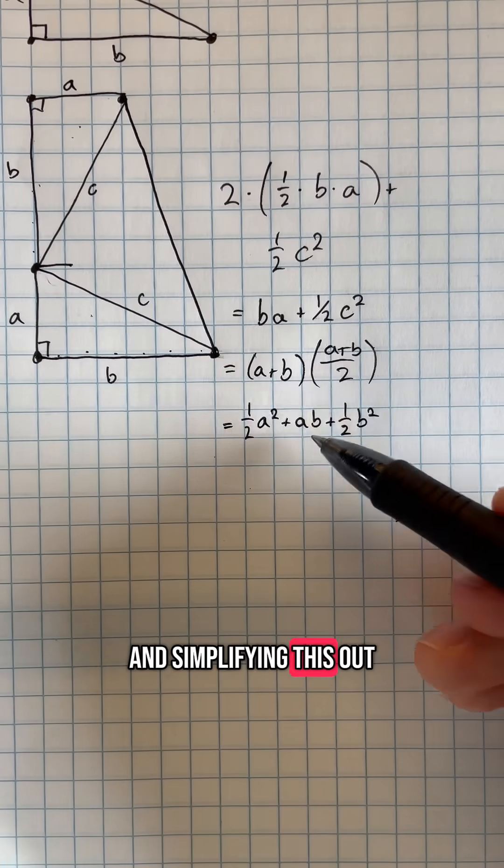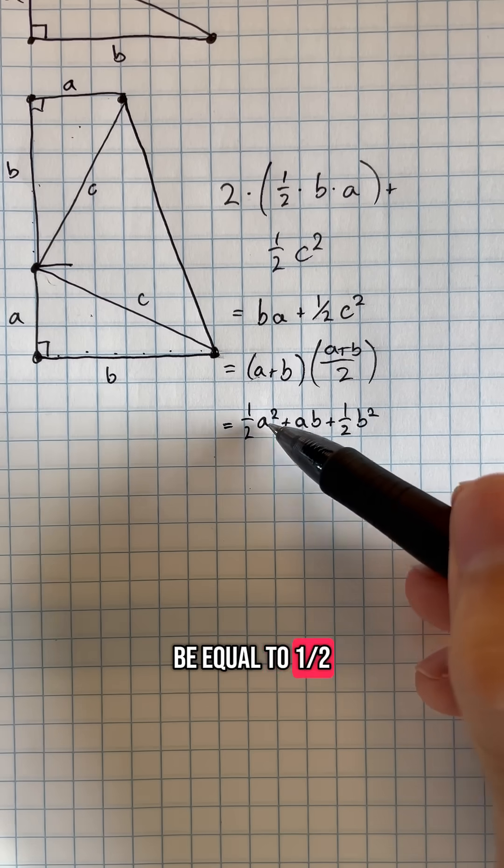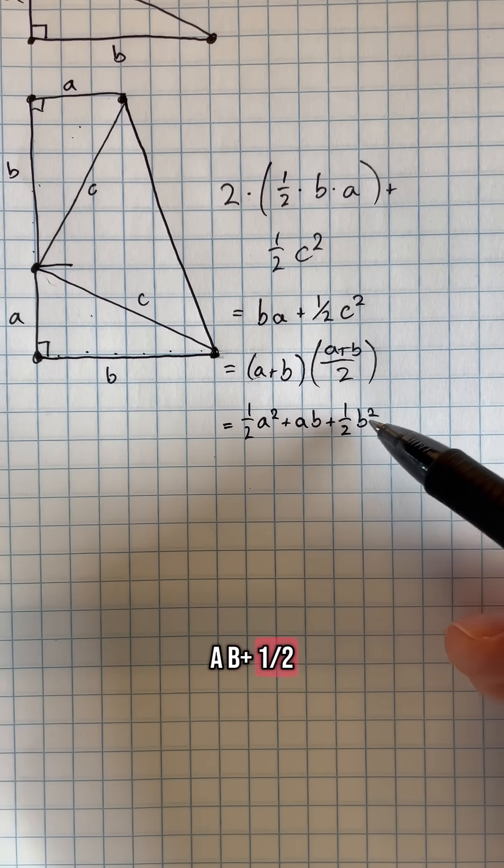Performing some FOIL and simplifying this out, we would see that this formula gives us that the area must be equal to ½a² + ab + ½b².